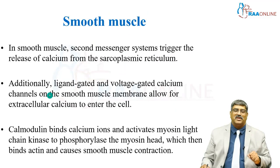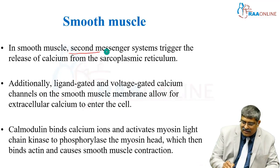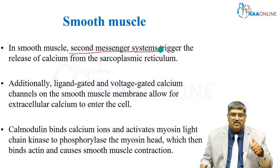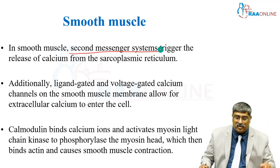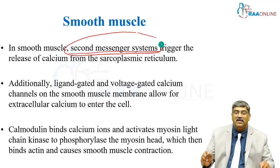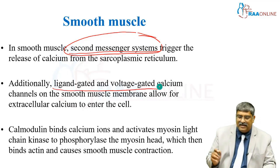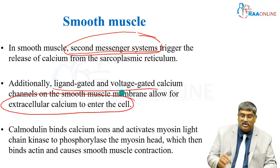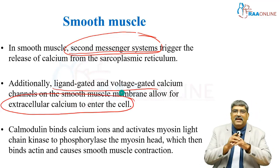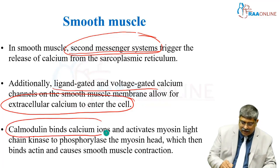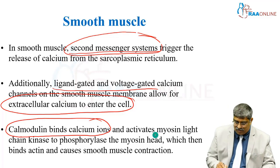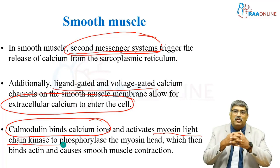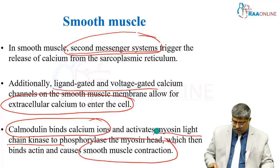Coming to smooth muscle contraction — in smooth muscle, the second messenger systems trigger the release from the sarcoplasmic reticulum. In skeletal muscle it is action potential, but here it is the second messenger system. Additionally, ligand-gated and voltage-gated calcium channels also allow extracellular calcium to enter the cell. This calcium then binds with calmodulin and activates myosin light chain kinase to phosphorylate, which causes actin and myosin to come together and induce muscle contraction.